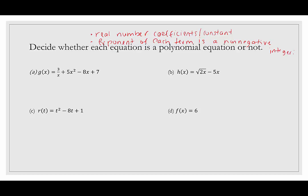Example a: g(x) = 3/x + 5x² − 8x + 7. There are real numbers, but this is not a polynomial. The term 3/x has x in the denominator — pulling x up gives 3 times x to the negative one, and negative one is not non-negative. So the answer is no, this is not a polynomial function.